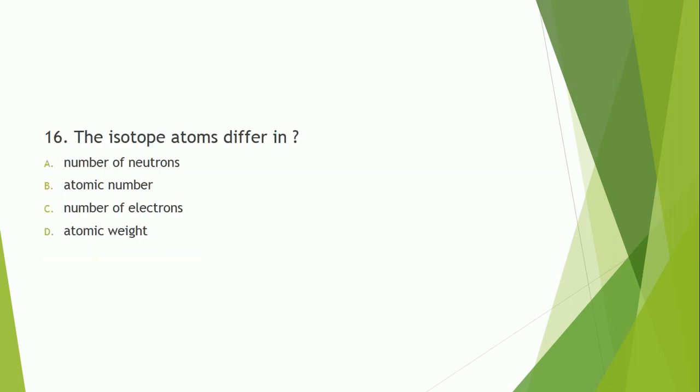Question number 16: Isotopes of an atom differ in what? The correct answer is option A — isotopes differ in the number of neutrons.